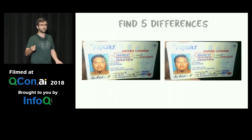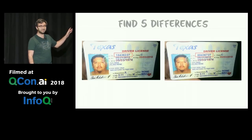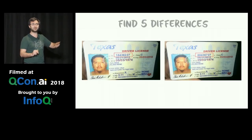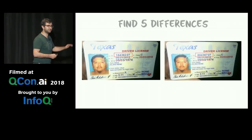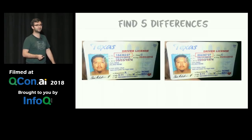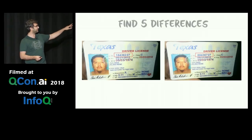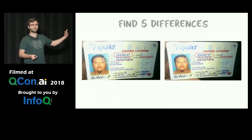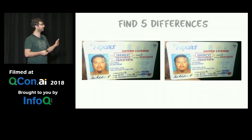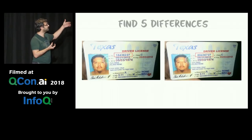So why try to detect similar IDs? I don't know if you've played the game 'find five differences' — you have two pictures and you're trying to find the differences. The answer is actually shown here. Does anyone want to take a stab at what's different about these two IDs? It's a couple of digits — if you look at the driver's license, this is a modified driver's license that we use for identity verification. The fraudster modified the driver's license number.